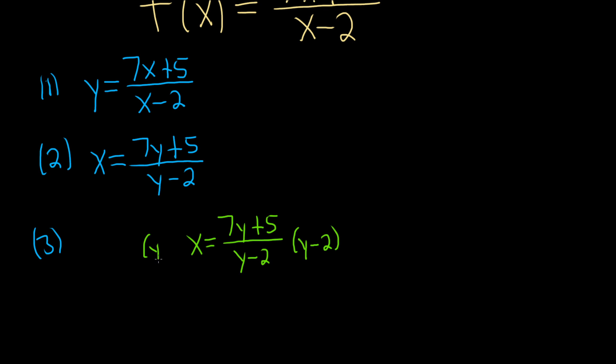And over here we have a y minus 2. So these cancel over here. Then on the left-hand side we can distribute the x. So we get y times x minus 2 times x. And that's equal to 7y plus 5.